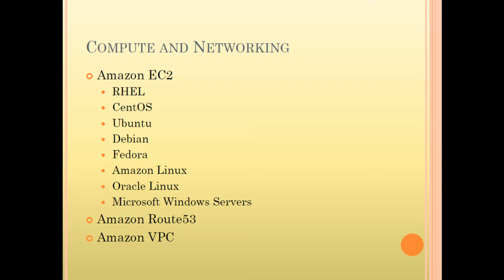Amazon EC2 supports Red Hat Enterprise Linux, CentOS, Debian, Amazon Linux, Oracle Linux, and Microsoft Windows Servers. Another service in this category is Route 53, where we deal with the DNS system configurable on the AWS platform. The third service is VPC, which allows us to create a Virtual Private Cloud — you can launch your instances in a private space within your cloud.